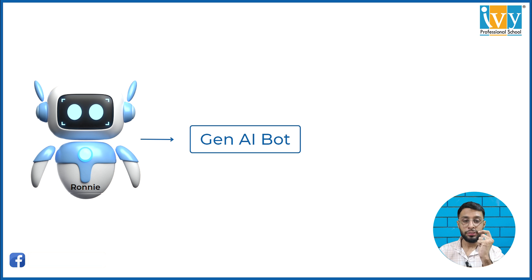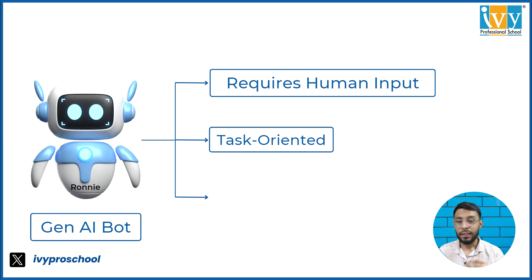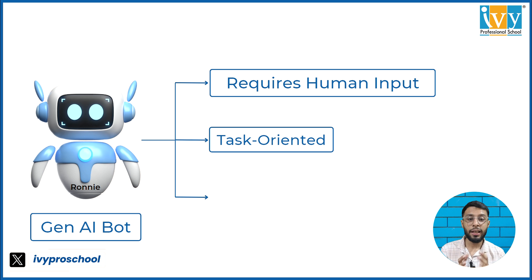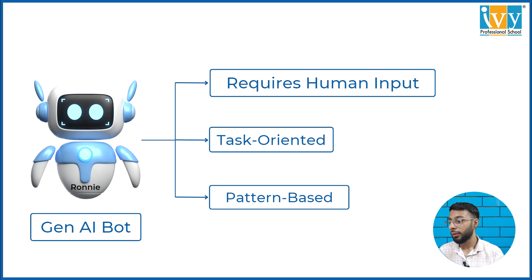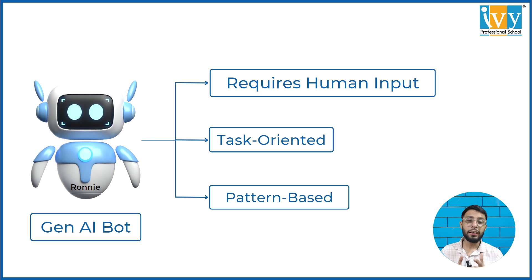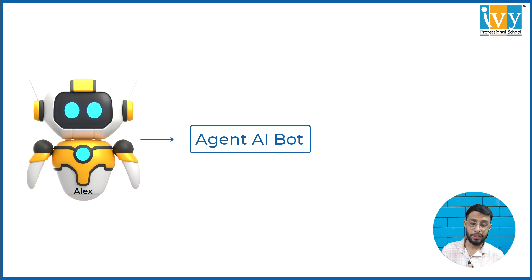Gen AI requires human input every time — you need to give it the task, it cannot make its own decisions. It is task-oriented, assigned to do a particular task, and cannot assume or create its own tasks. It is also pattern-based, so the output you get from a gen AI will be similar each time because it is based on trained data.